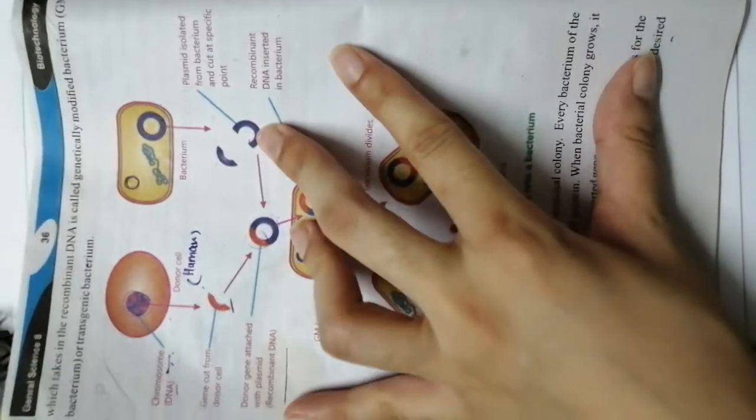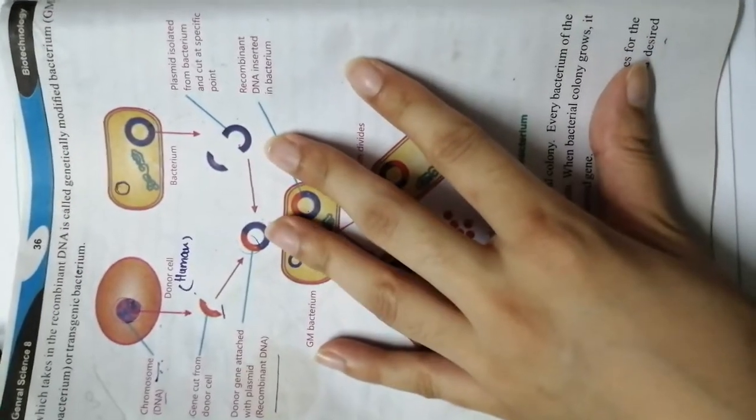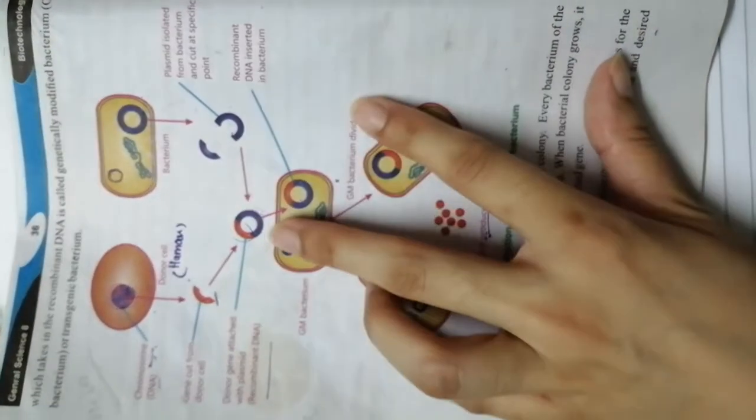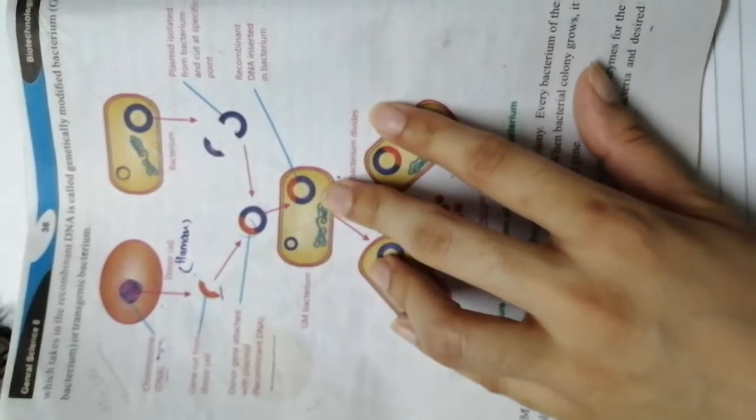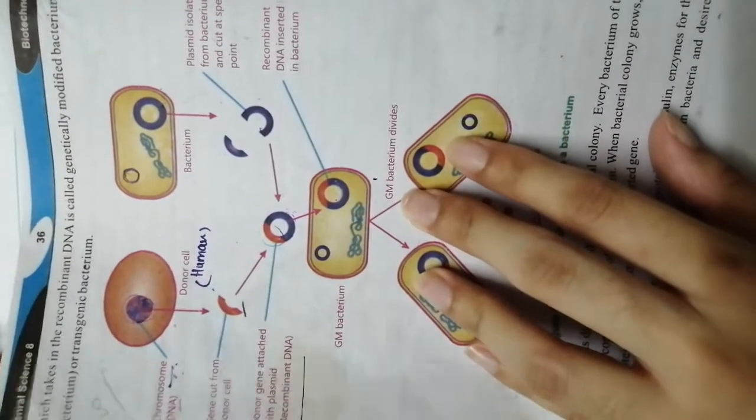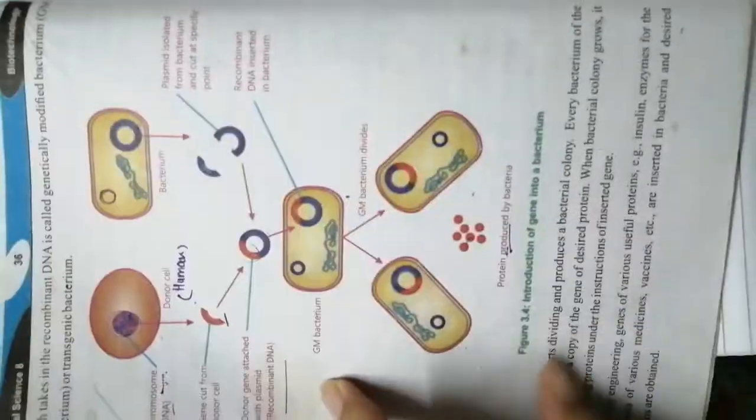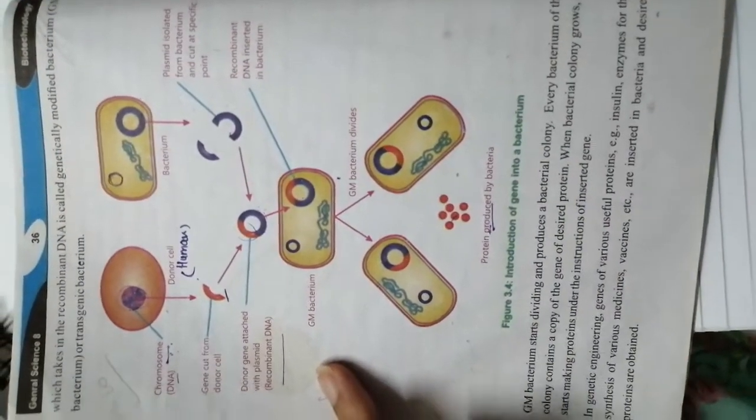Then the donor gene is attached with the plasmid, which we call recombinant DNA. And that recombinant DNA is inserted back into the GM bacterium. The GM bacterium again starts dividing and releases the proteins that are required by our body.